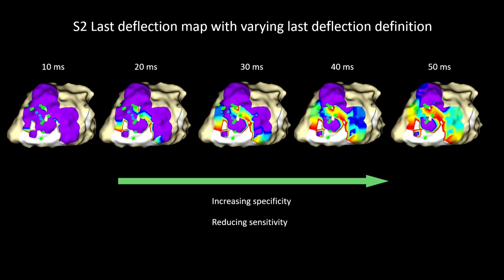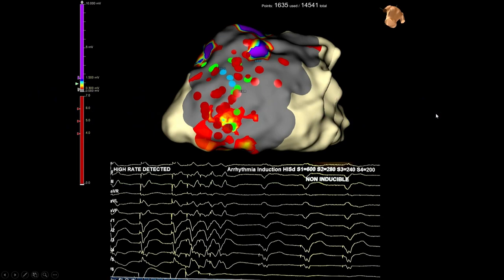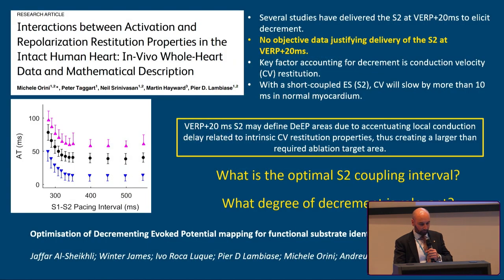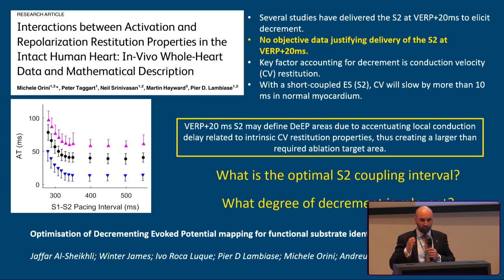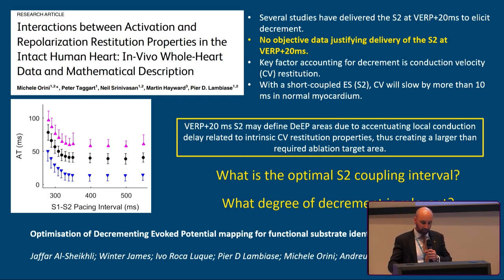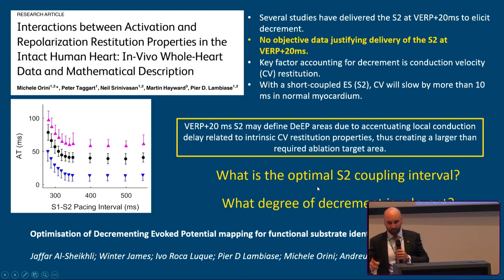An important question: what is the definition of decrement? How much is relevant—10, 20, 30, 40, or 50 milliseconds? As you increase the threshold for decrement, you reduce sensitivity but increase specificity. Several studies have delivered S2 at VERP plus 20 to elicit decrement. However, there is no objective data to support this, and numerous studies show that if you pace a normal ventricle aggressively enough at VERP plus 20, you will induce decrement—a normal physiological response. We addressed two questions: what is the optimal S2 coupling interval, and what degree of decrement is relevant?